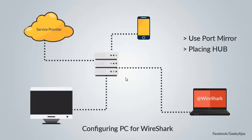There are two methods for capturing traffic in a network. The first one is port mirroring, and the second is segment placement. Port mirroring basically works on switches — Cisco switches or other managed switches. If traffic comes in from one port and is sent back to the router, you can use port mirroring, because in switches there is no broadcast.